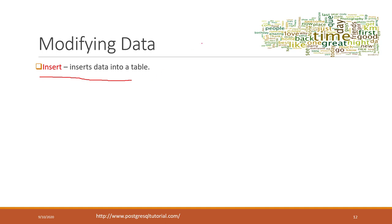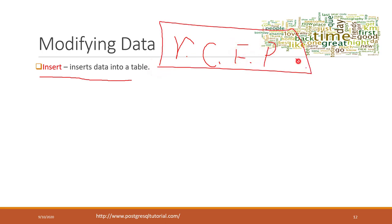Another thing to keep in mind is that when modifying a table, all the other rules — the constraints, the foreign keys, and primary keys — still apply to those SQL modifications. If your actions violate any of those rules or constraints, that modification will fail.